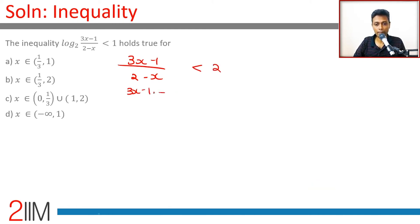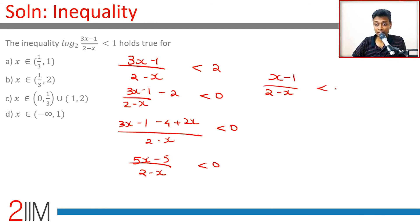(3x - 1)/(2 - x) - 2 is less than 0. (3x - 1 - 4 + 2x)/(2 - x) is less than 0. 3x plus 2x is 5x minus 5, by 2 minus x, is less than 0. Or (x - 1)/(2 - x) is less than 0, removing the 5.